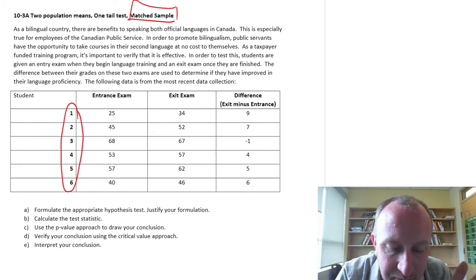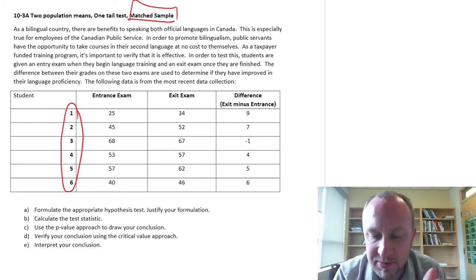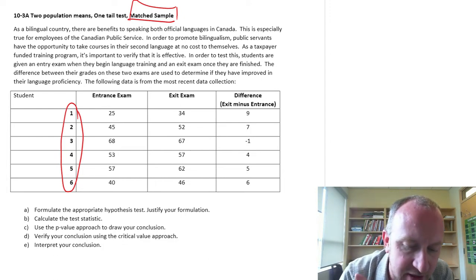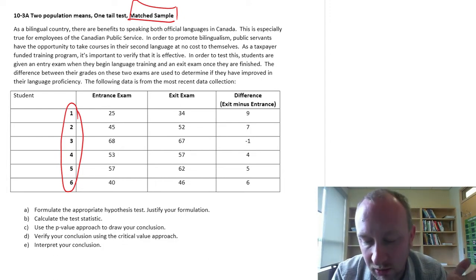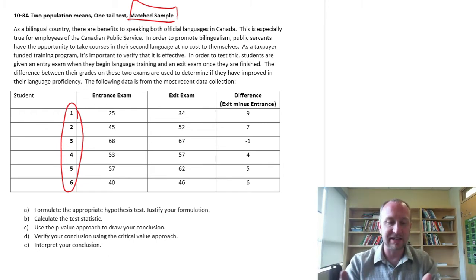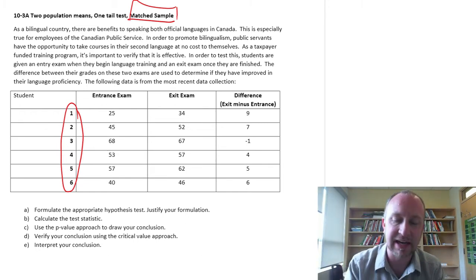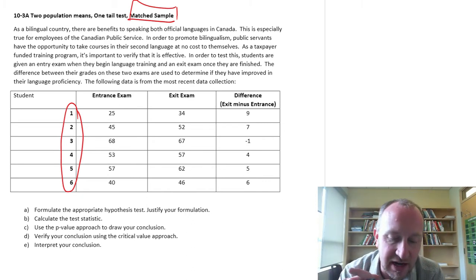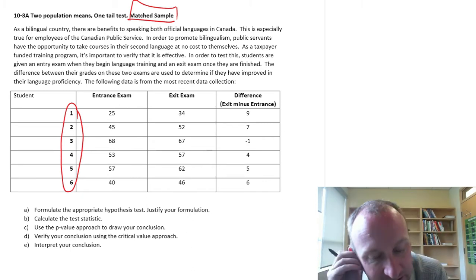So here in Canada, it's a bilingual country, so there's benefits to speaking both official languages. This is especially true in our public service. So in order to promote bilingualism, public servants have an opportunity to take courses in their second language at no cost. Students are given an entry exam when they begin the language training and an exit exam when they are finished. The difference between their grades are used to determine if they've improved.